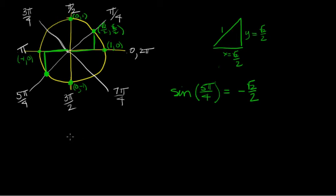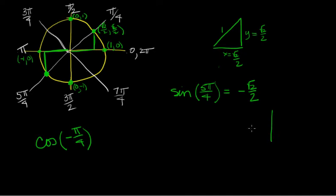Let's try the cosine of minus pi over 4. I know it's an odd multiple of pi over 4, so it will be square root of 2 over 2, but I have to see exactly where it is. Going clockwise 1 pi over 4 gives me a point in quadrant 4. For a 45-45 triangle, cosine is the x-coordinate. X is positive, so cosine of minus pi over 4 equals the square root of 2 over 2.